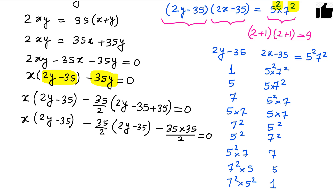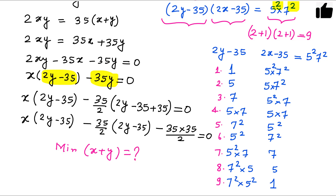Counting all factor pairs, you have 9 factors. You need to find the minimum value of x plus y, so the factor pair giving the smallest values of x and y is best. The pair (35, 35) would give the minimum, but the question states x and y must be different positive integers, so this factor pair is not accepted.